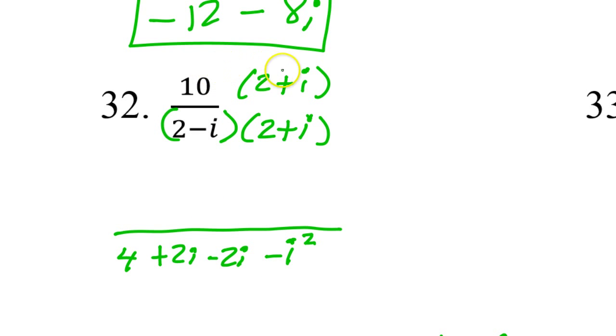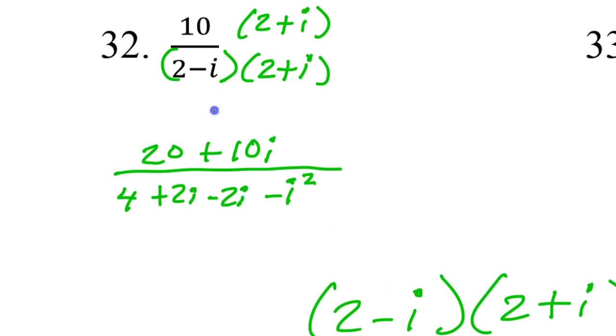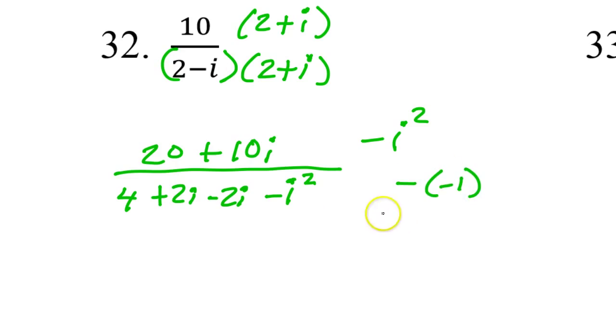In the top, I just distribute the 10. So that's going to make 20 plus 10i in the numerator. You see that i squared, right? I know you see it. What happens when you have i squared? It's a negative 1, okay? But be careful. I have a negative i squared sitting here. Do you see it? So that's like a negative negative 1. So it's going to wind up being a positive 1. Do you understand that? Negative i squared is a negative negative 1. It's going to be a plus 1.